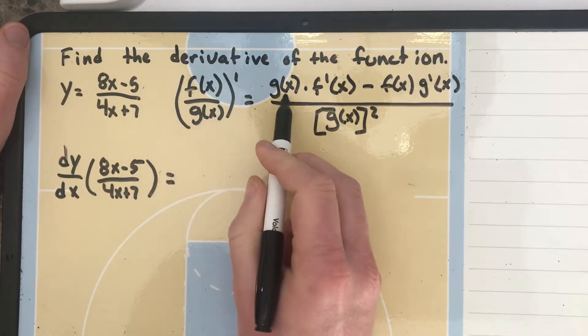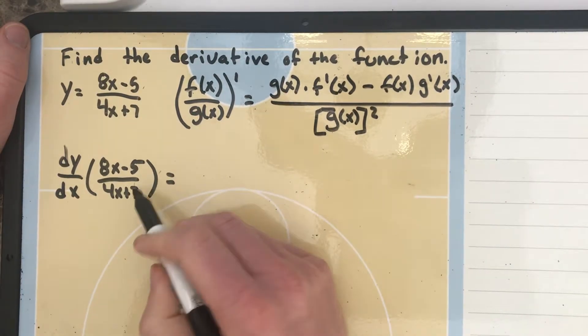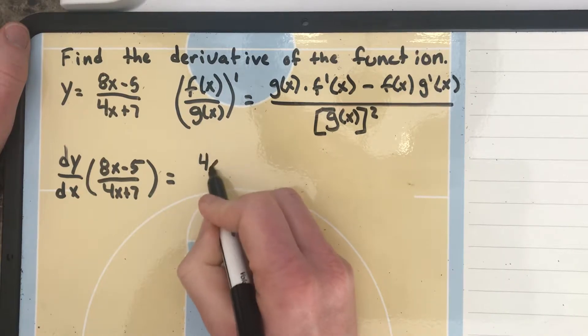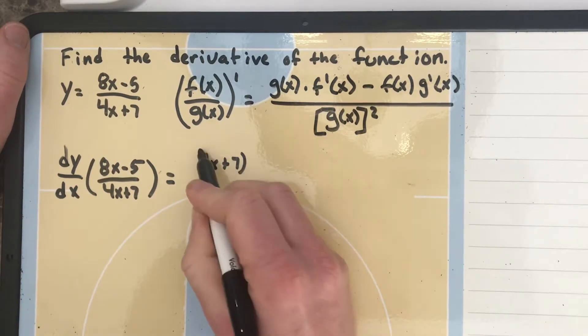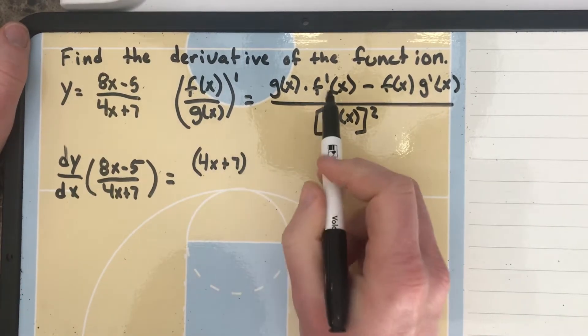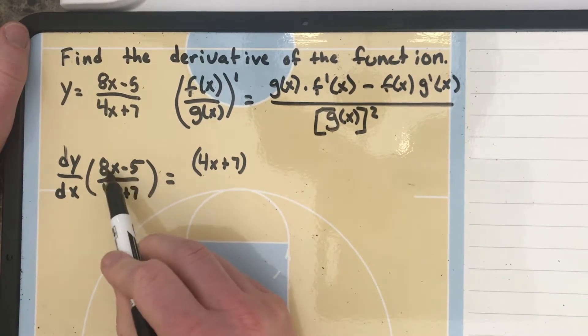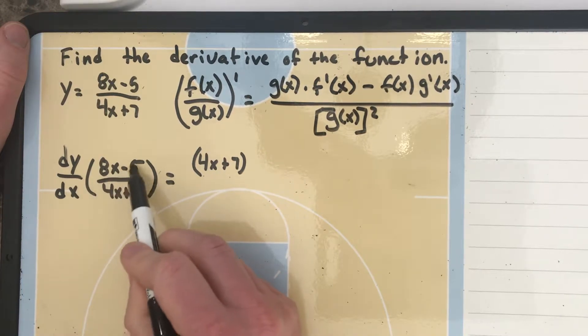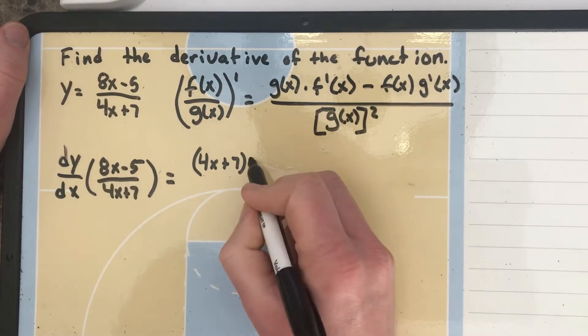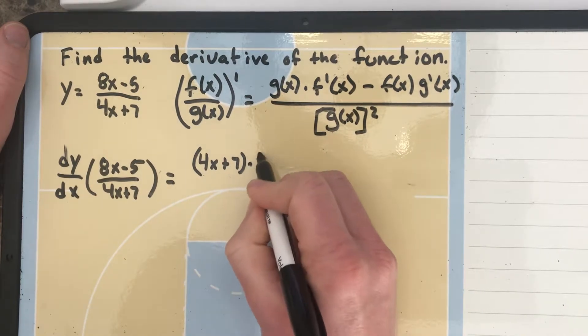And let's take the g of x, which is the bottom. We'll say 4x plus 7. And we're going to take it times the derivative of the top function. So what's the derivative of 8x minus 5? Well, the derivative of 8x minus 5, this gets to be 0. And 8x, the derivative of that is 8. So we'll say times 8.